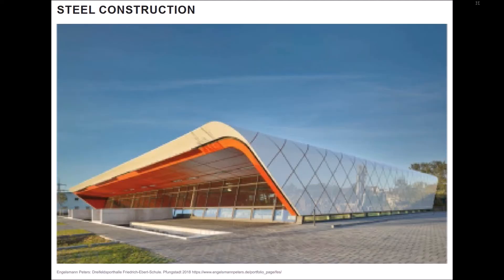The three-field sports hall, designed by the architect Engelmann-Pieters, is a steel structure that is built on a reinforced concrete foundation. The primary support structure consists of six multi-span frames of different span width, which are stiffened by a secondary structure that is pulled down on the sides. The secondary structure carries a laterally closed cassette, which was made from pure hard foam panels. The east and west facades are completely glazed.